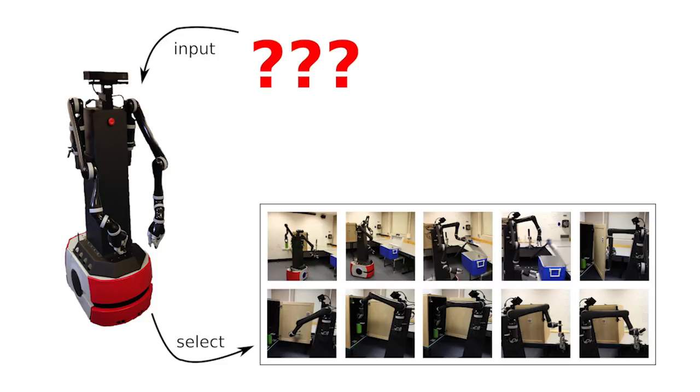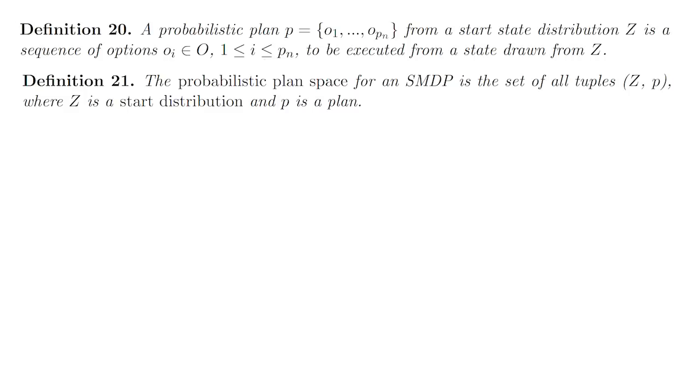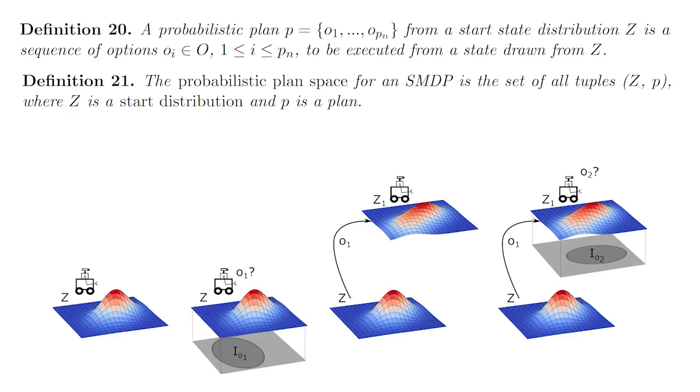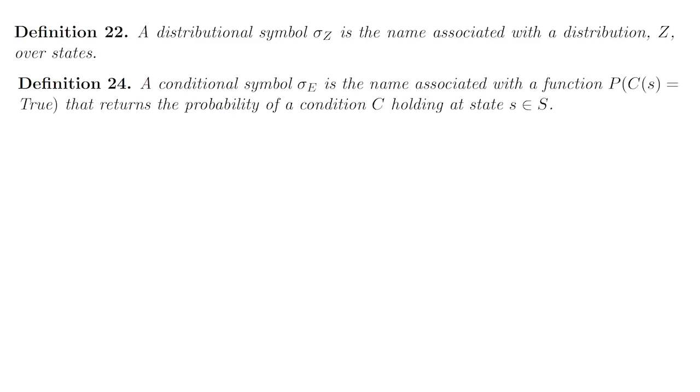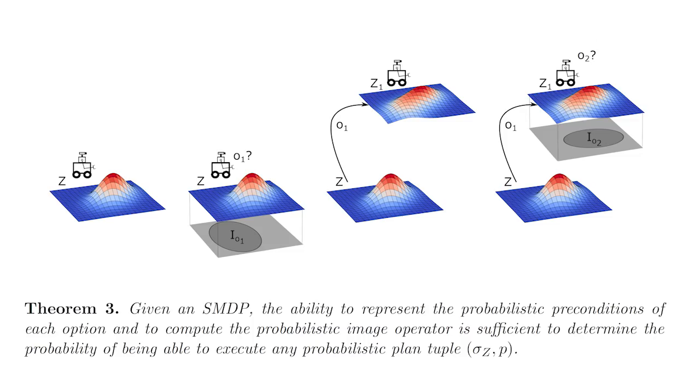We take the complementary approach. Given a set of high-level skills, can we construct the simplest abstraction over the robot's sensory motor space that still supports planning? By formally defining the plan space of the robot, and reasoning about the computation required to determine the probability of executing any plan, we show that an appropriate abstract representation can be built out of symbols naming probability distributions over the robot's sensory motor space.